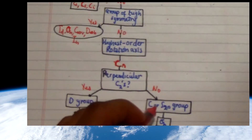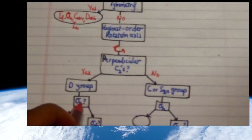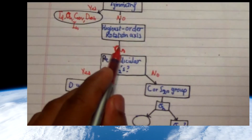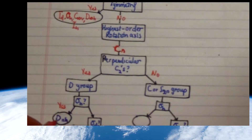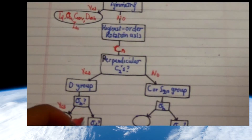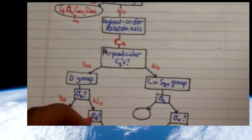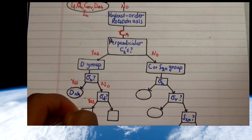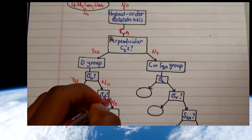If you don't have C2' axes present, you continue toward the C or S2n groups. For those with C2' axes, we next check for a sigma-h plane perpendicular to the principal CN axis. If yes, you are DNH (where N could be 3, 4, 5, etc.). If you don't have sigma-h but you have a dihedral plane, you are DND. If you have neither, you remain DN.